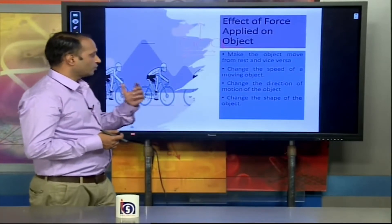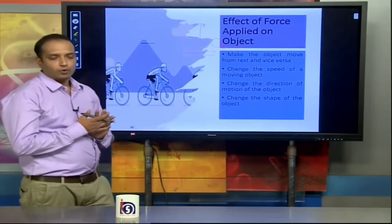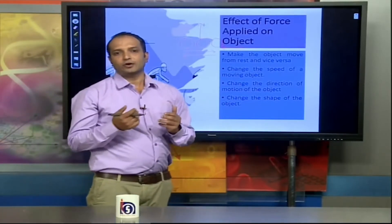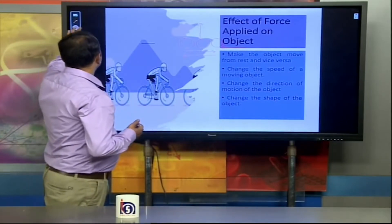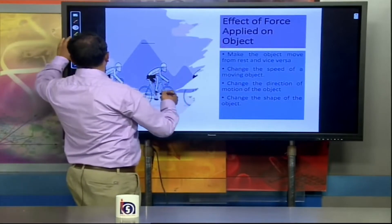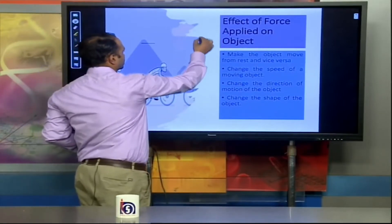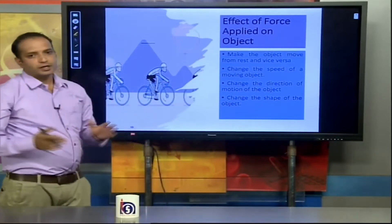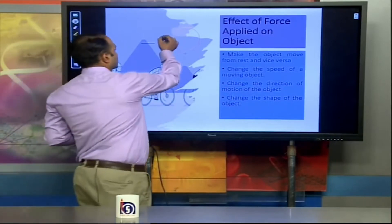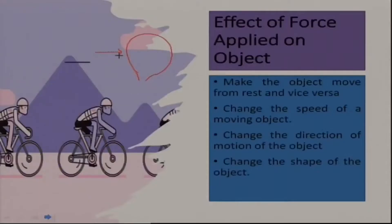Force can also change the shape of an object. For example, suppose we have a balloon. When a force is applied from the left-hand side and another from the right-hand side, the balloon is compressed and its shape changes. So a force can change the shape of any object.